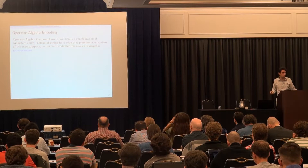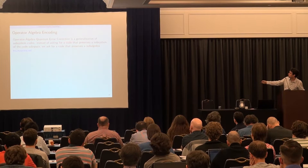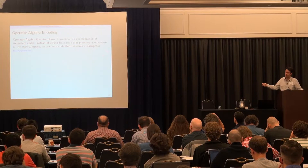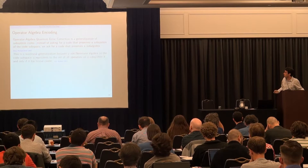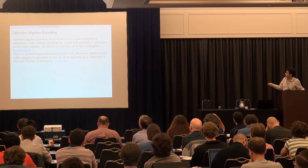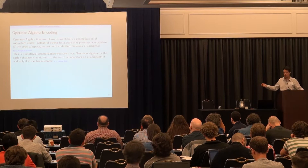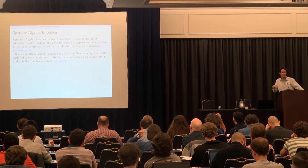This is a non-trivial generalization: a von Neumann algebra acting on the code subspace equals all operators on a subsystem if and only if it has trivial center. A generic operator algebra will not have trivial center, so this is really a generalization of subsystem codes — one that in this community hasn't received much attention yet, which is one of the reasons I want to discuss it here.